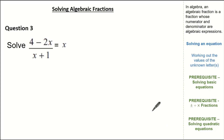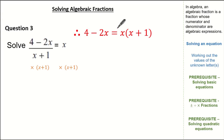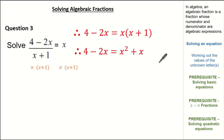Now let's look at a slightly harder question. We need to solve (4 minus 2x) over (x plus 1) equals x. This is slightly different because the divisor is an algebraic expression, but we repeat the same process. To remove the division by (x plus 1), we multiply both the left-hand side and right-hand side by (x plus 1). Multiplying the left-hand side simply gives us 4 minus 2x, and multiplying the right-hand side gives us x(x plus 1). Expanding gives us 4 minus 2x equals x squared plus x — and notice we have an x squared term, indicating we'll use our knowledge on solving quadratic equations.